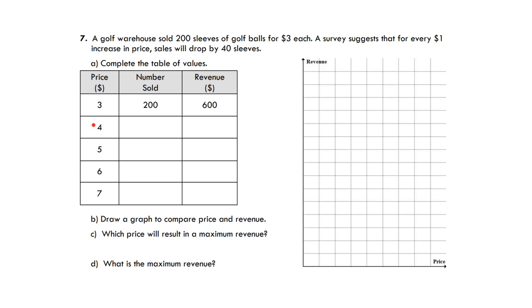But now, if I sell it for $4, remember that 200 sold before? That 200 sold is now dropped by 40 sleeves, which is just 200 minus 40, which gives us 160.